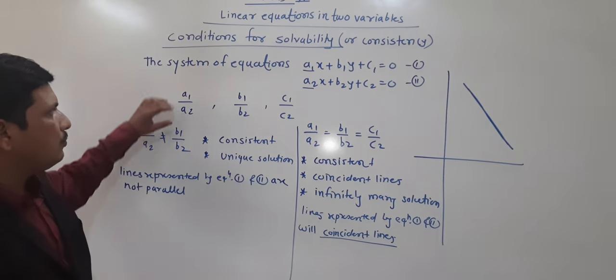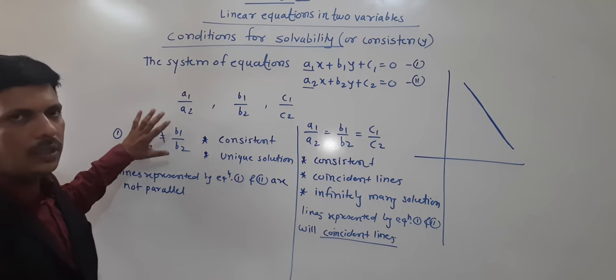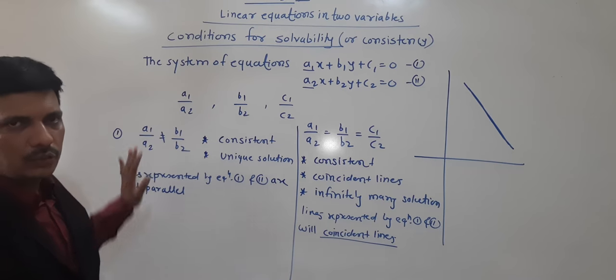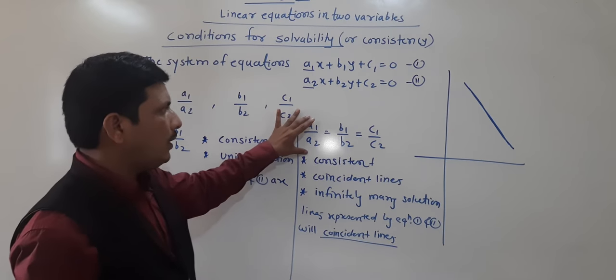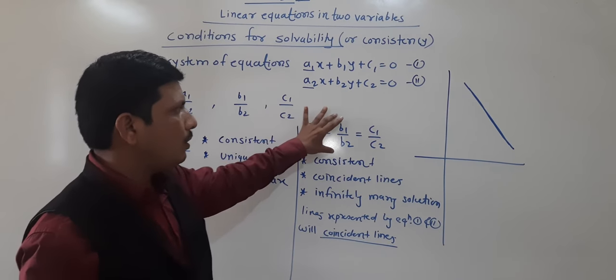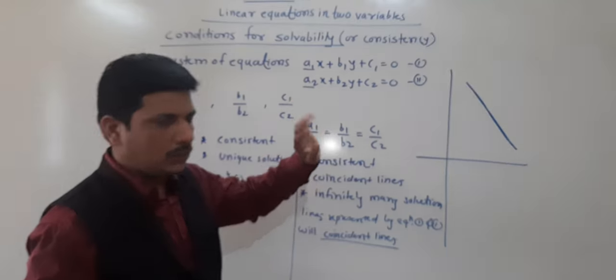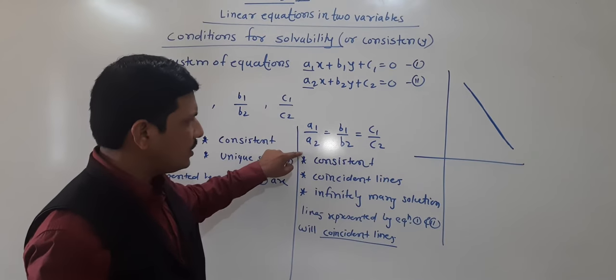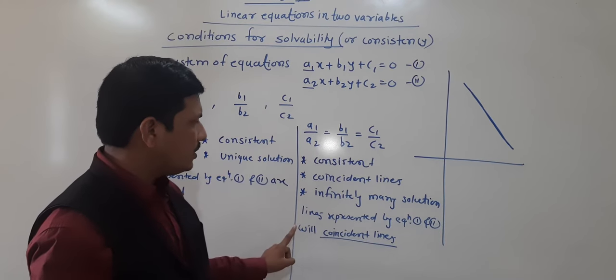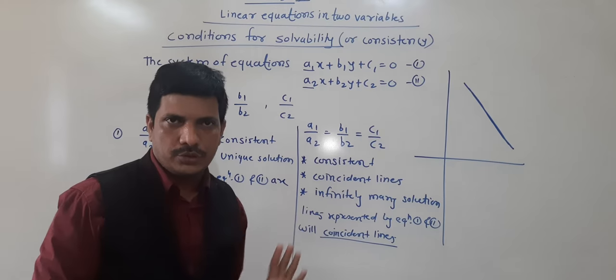So two conditions we have seen: when a1/a2 is not equal to b1/b2 — consistent, unique solution. When a1/a2 = b1/b2 = c1/c2 — consistent but infinitely many solutions.